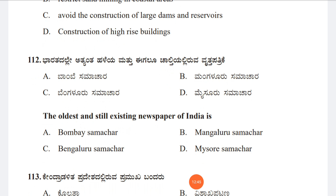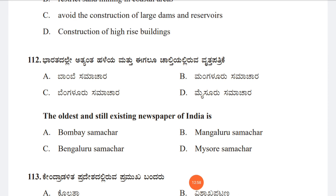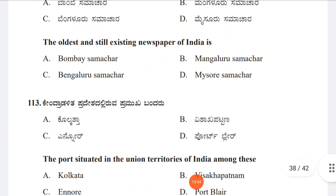Question 112: The oldest and still existing newspaper of India is Option A: Bombay Samachar, Option B: Mangaluru Samachar, Option C: Bengaluru Samachar, Option D: Mysore Samachar. Option A, Bombay Samachar, is the right answer.